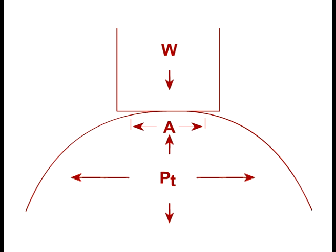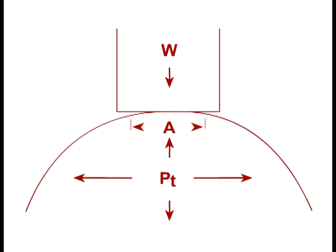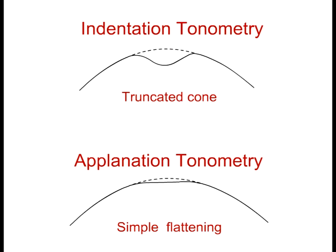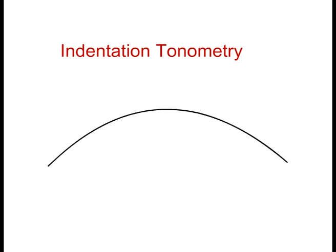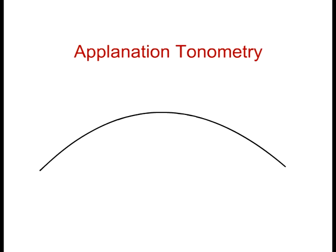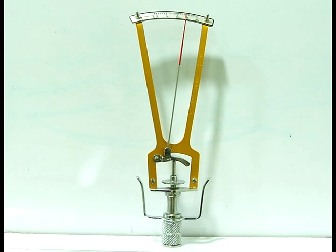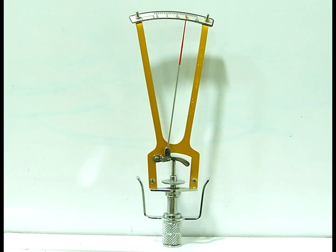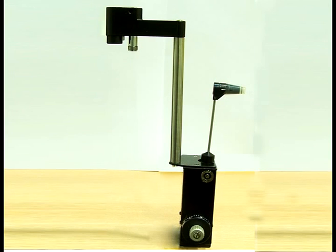Intraocular pressure is measured by relating deformation of the globe to the force responsible for deformation. Depending on shape of deformation, tonometry has been categorized into two types: indentation tonometry, where the shape of deformation is a truncated cone, and aplanation tonometry, where the shape of deformation is simple flattening. Their prototypes are Schiotz's tonometer and Goldman aplanation tonometer respectively.